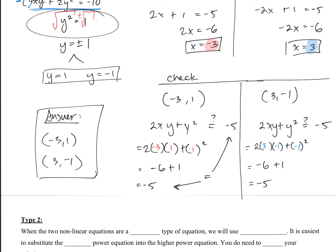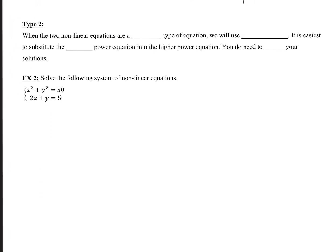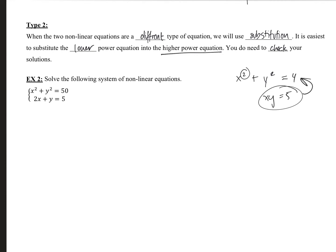So when do we use elimination for non-linears? That's if they're the exact same type of equation. But what if they aren't the same? That brings up type 2: when the two non-linear equations are a different type of equation, we will use substitution. It is easiest to substitute the lower power equation into the higher power equation. And you need to check your solutions.